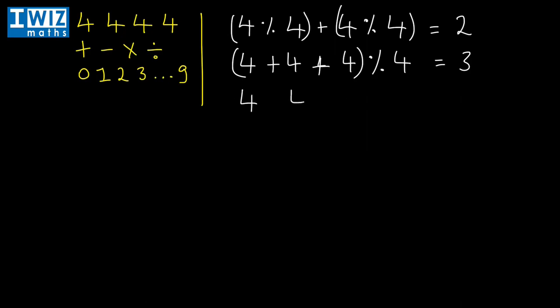Now with four, four, four, and four, we want to get to the number four. We can do four plus four minus four, so four minus four is zero, multiply that by four and you still get zero. So four plus zero equals four.